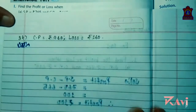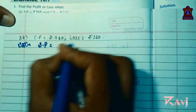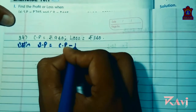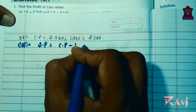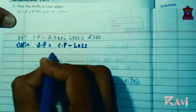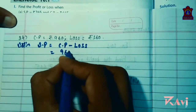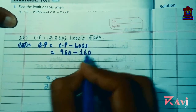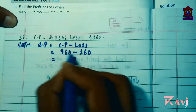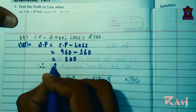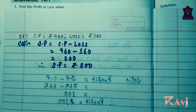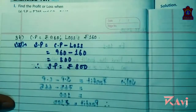The question is asking you to find SP. So SP equals CP minus loss. CP is how much? 960 minus 160. So 960 minus 160: 0, 0, 6 minus 1 is 8 — therefore SP equals rupees 800. Like this you have to find out the other questions from question number three.